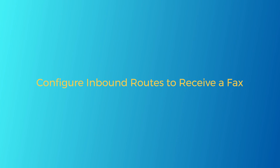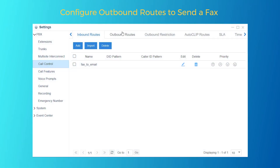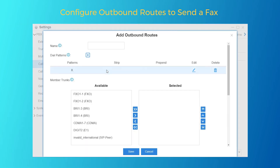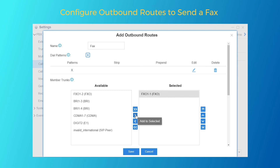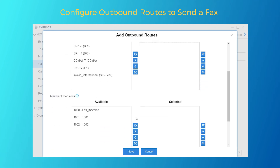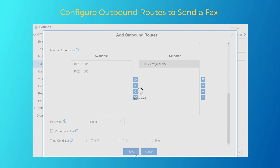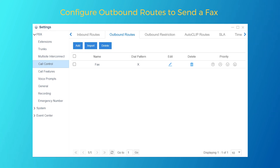That covers the fax receiving part. Let's turn to the outbound route and see how to send a fax with the fax machine. Create an outbound route, name it, choose the analog trunk as well as the fax extension. Save and apply all settings. Now we're able to send a fax through the selected trunk.